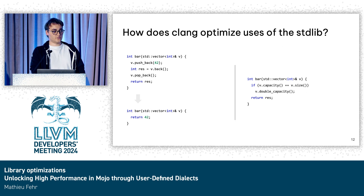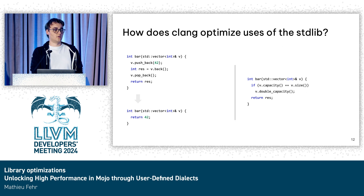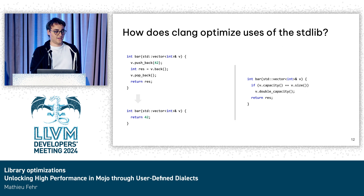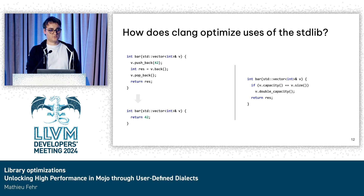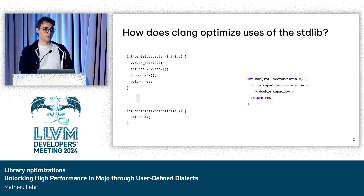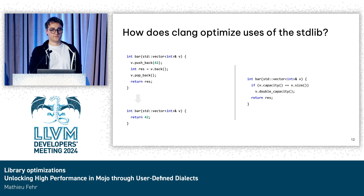This time the issue is that semantically doing a pushback is actually more complex than just adding an element. It may also double the capacity in some cases, and when you double the capacity you have a reallocation — and this is something the compiler can observe. So the compiler knows it cannot optimize it away, because doubling the capacity is actually a side effect. So pushing back and then popping back is not just doing nothing.